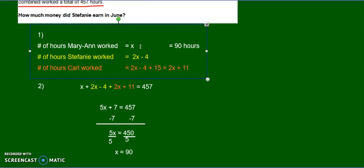How many hours did Stephanie work? Well, she worked 2 times 90 hours minus 4. And what is that? 180 minus 4 is 176.